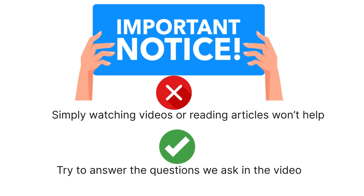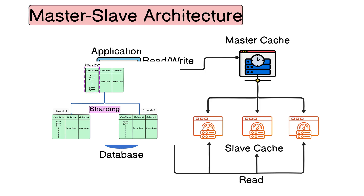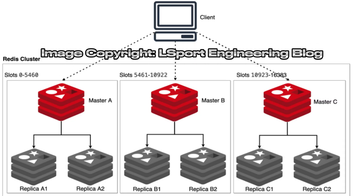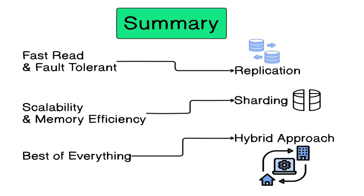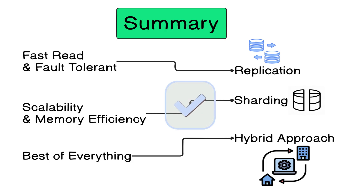Instead of opting for a single approach, we can implement hybrid approaches. In real-world enterprise architectures, we often combine multiple approaches. For example, we can use sharding along with replication — data is sharded across multiple cache servers, but each shard is replicated to a backup server for fault tolerance. For example, Redis Cluster with replicas: each shard has a primary server and a replica. To summarize: if you want faster reads and better fault tolerance, go with replication using master-slave. For better scalability and efficient memory usage, go with sharding. And for the best of both, do sharding with replication — the data is partitioned but also has replicas for failure recovery. This is how distributed caching is architected in real-world enterprise systems.